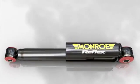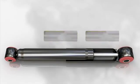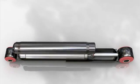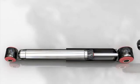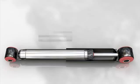Twin tube shock absorbers, as the name suggests, have a body made of two concentric tubes. These tubes create the working chamber and the reserve chamber.